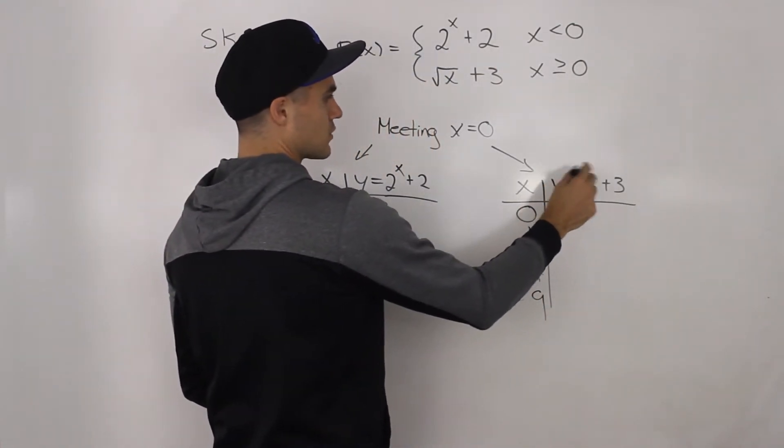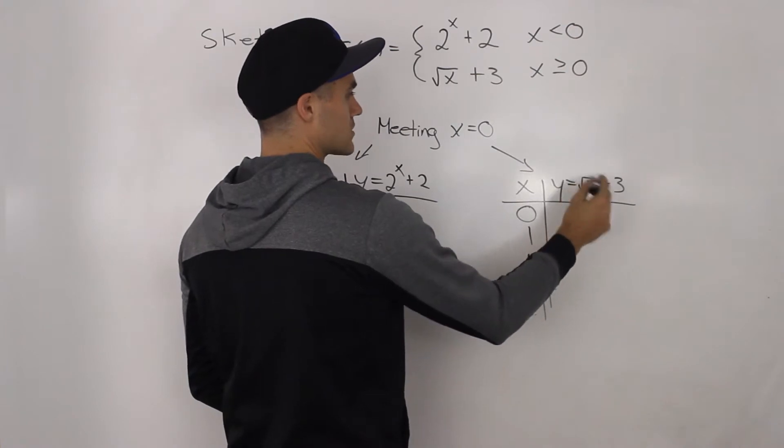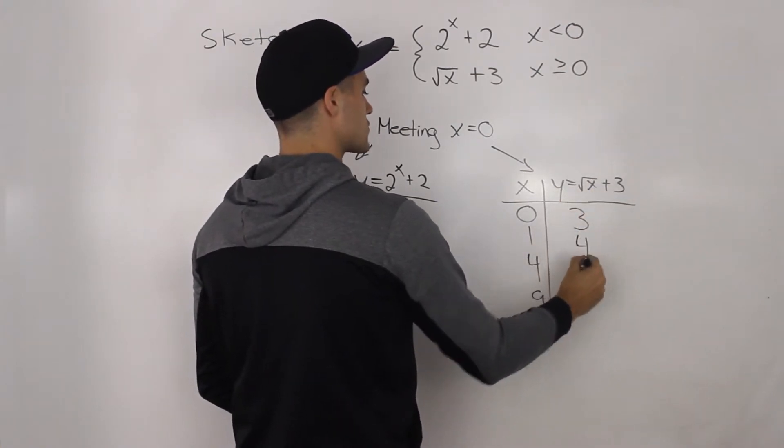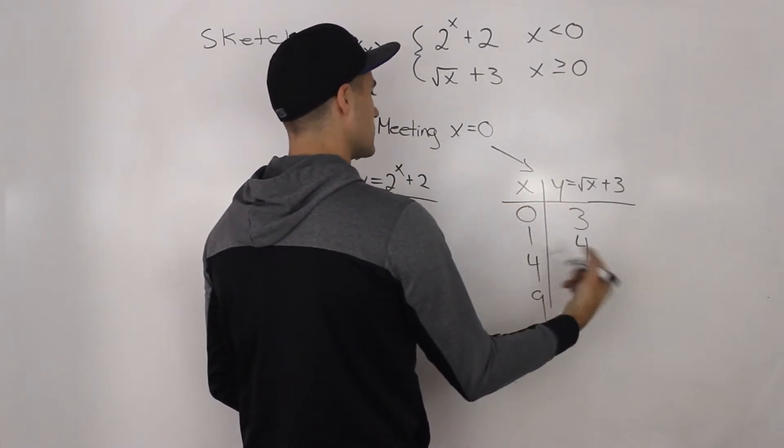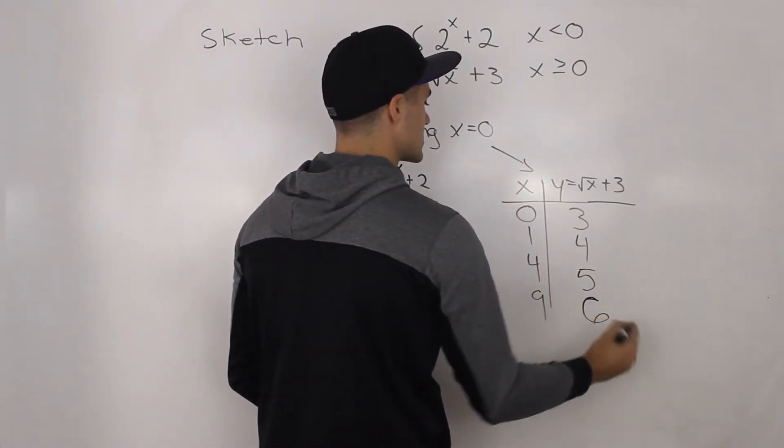Square root of zero is zero plus three is three, square root of one is one plus three is four, square root of four is two plus three is five, square root of nine is three plus three is six.